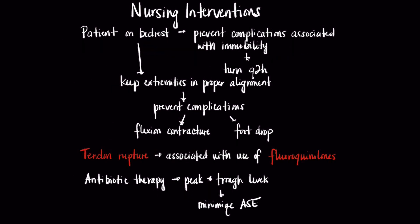Patients admitted with osteomyelitis are sometimes placed on bed rest, so it's important to decrease complications associated with immobility — such as turning patients at least every two hours to prevent pressure injuries and keeping extremities in proper alignment to decrease contractures and foot drop. With regard to medications, educate patients about certain drugs like fluoroquinolones, which can cause tendon rupture. Also identify which antibiotics require peak and trough levels so that adverse side effects can be minimized.